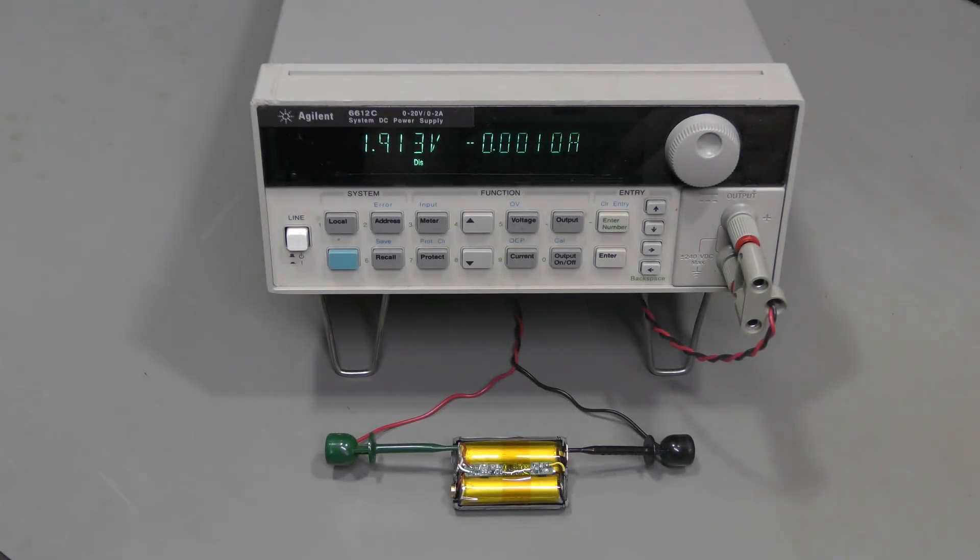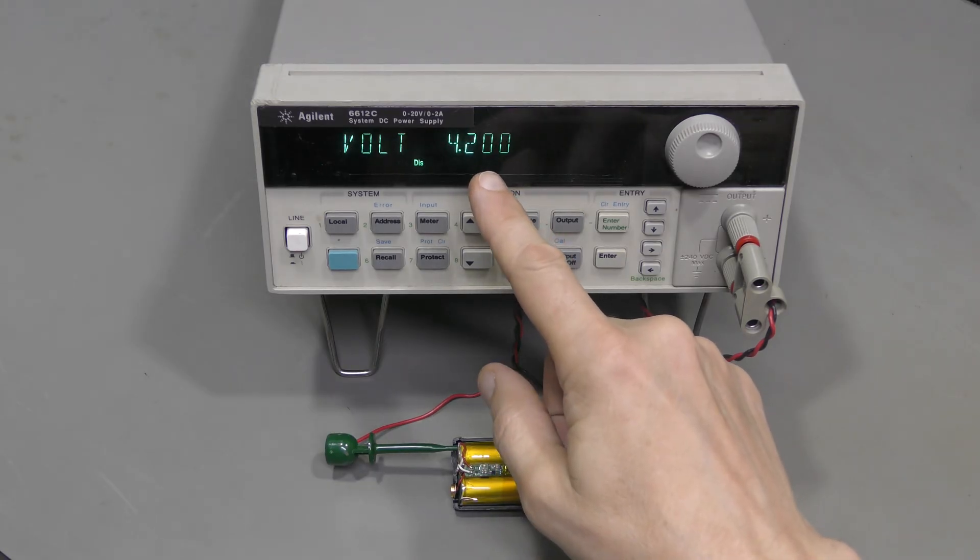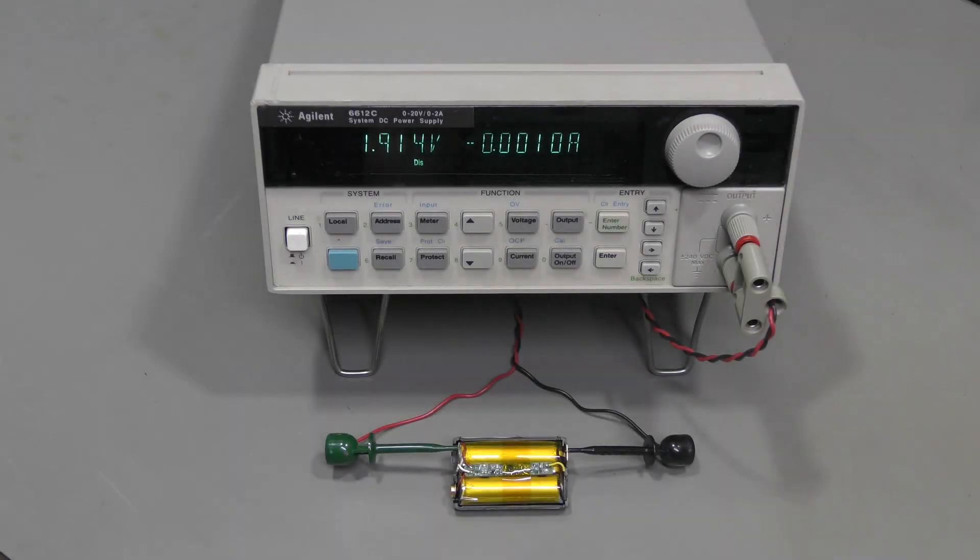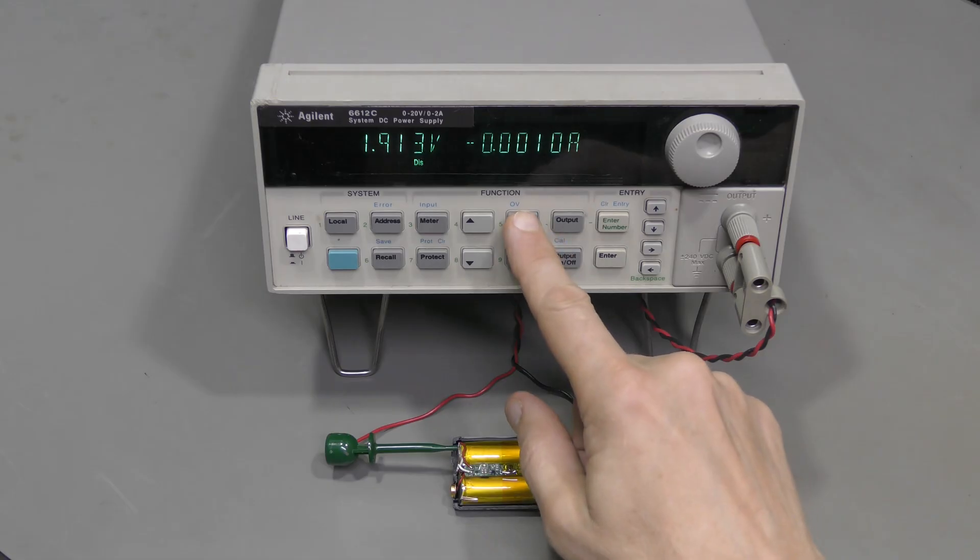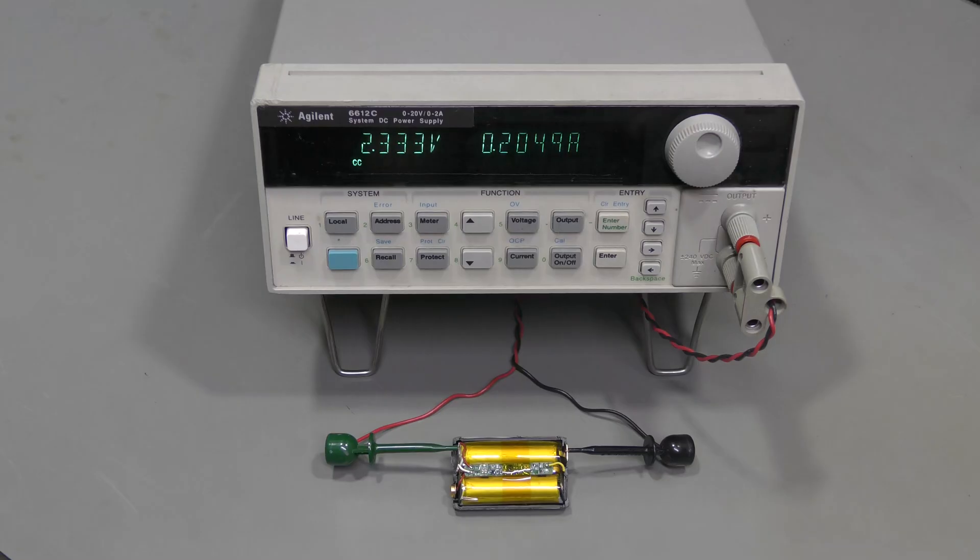So I connected the battery to a lab supply. I limited the voltage to 4.2V just in case. The current is limited to 0.2A. So let's turn this on and we will see if we can bring the voltage above 3V at least.